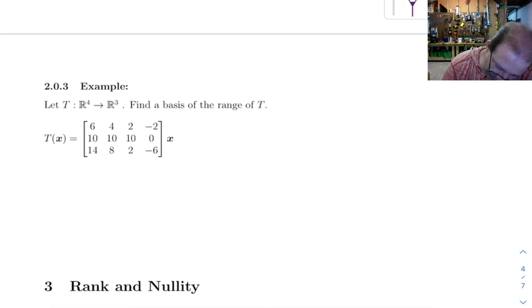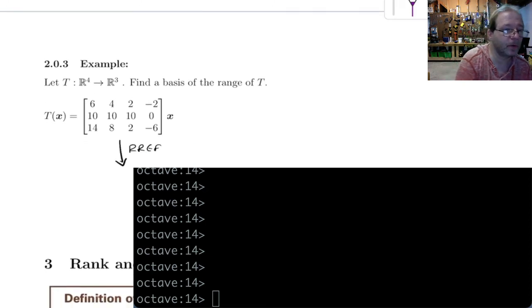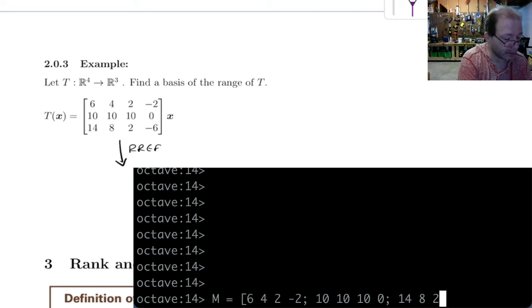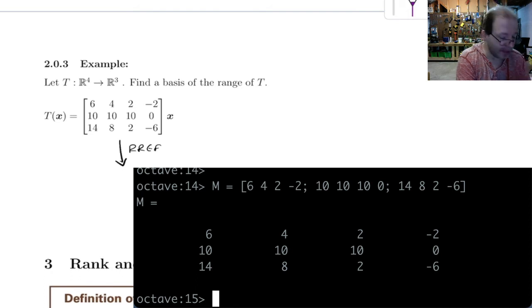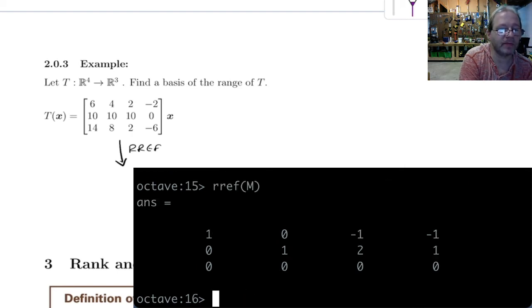So all I have to do is find the basis of the column space here. So let's row reduce this thing. So we've got 6, 4, 2, negative 2, 10, 10, 10, 10, 0, and 14, 8, 2, negative 6. All right, so we've got that. Remember when you find the basis of the column space, you row reduce this.